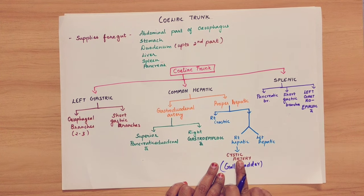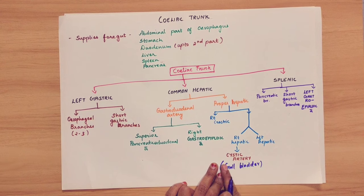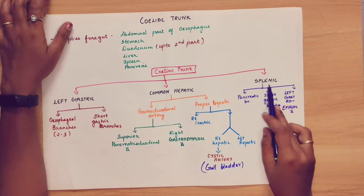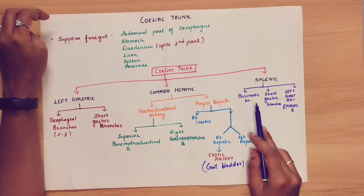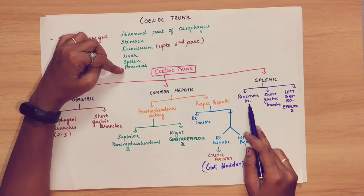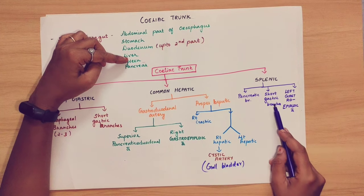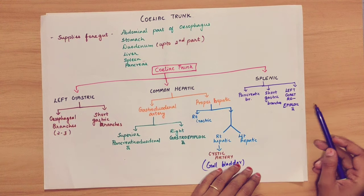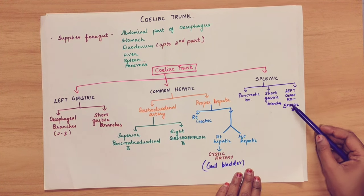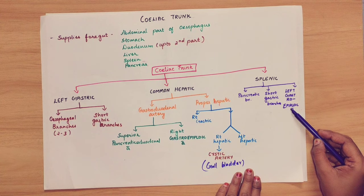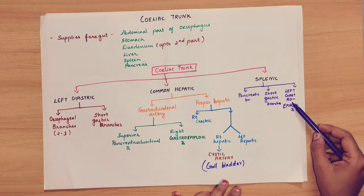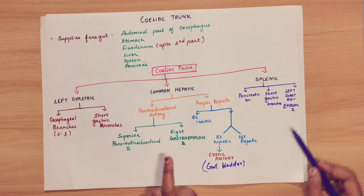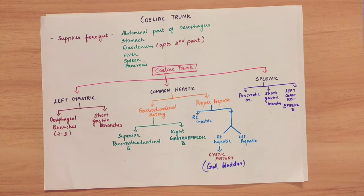Coming to the splenic artery — the splenic artery has branches supplying the pancreas. The second branch is the short gastric branches, which are small branches in the stomach. Then the left gastro-epiploic artery, and on the other side the right gastro-epiploic artery.